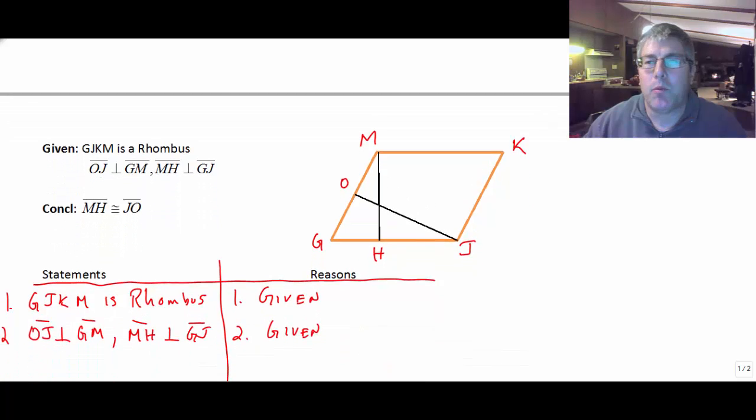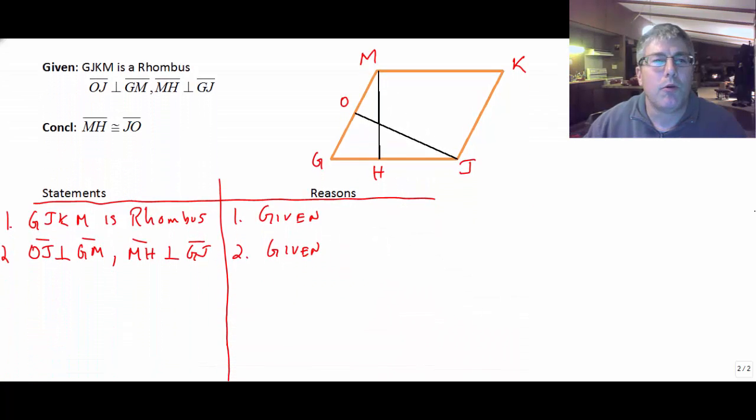Let's take a look at a sample problem. Let's do a proof and we'll apply angle-angle-side. We're given our figure here GJKM as a rhombus and we're given that OJ is perpendicular to GM and MH is perpendicular to GJ.